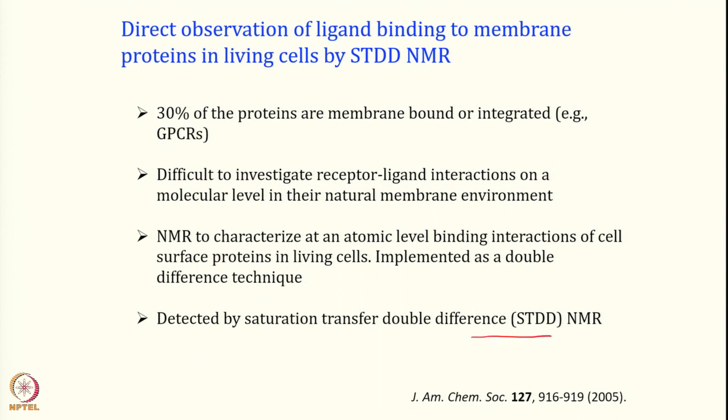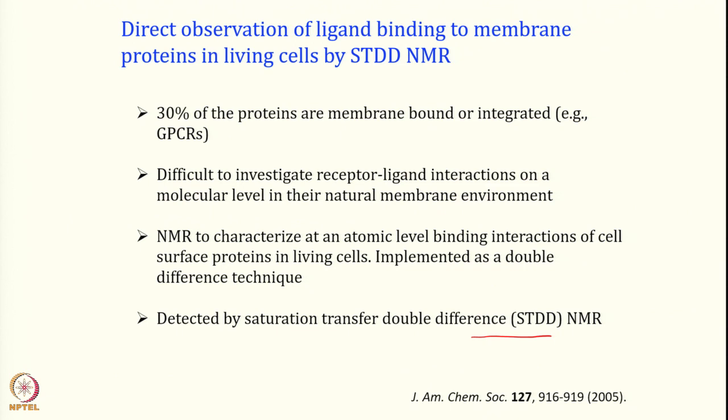As a biologist, you know that not all proteins can be purified to high concentration. There are various intrinsic problems with protein purification and stability. Some proteins cannot be taken in solution but can be taken in a membranous environment, though reconstitution is really tough. These are major targets — one example is GPCR, G protein-coupled receptor. About 30 percent of proteins are membrane-bound or integral membrane proteins, and these are important drug targets.